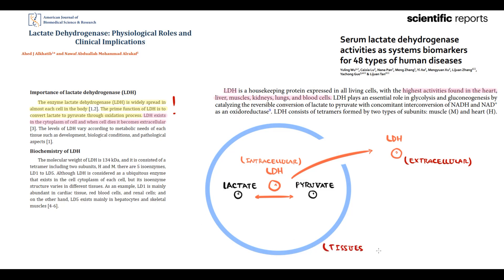The amount of LDH differs from tissue to tissue. LDH is present in highest concentrations in the heart, liver, muscles, kidneys, lungs, and red blood cells.